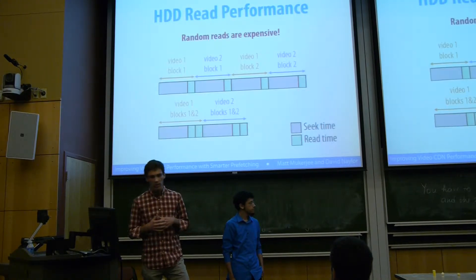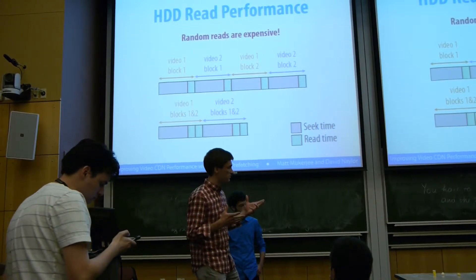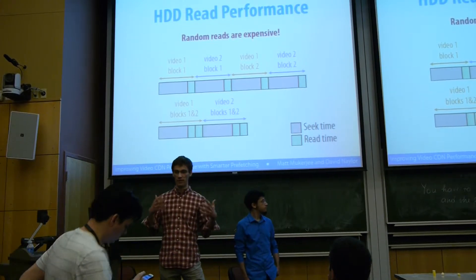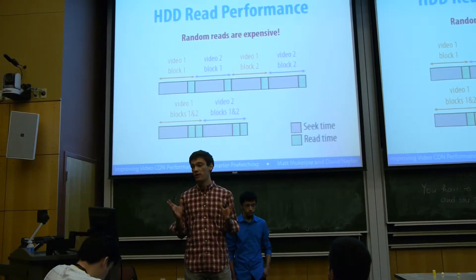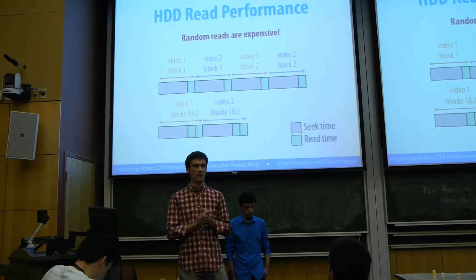We think part of the problem is disk contention. If you think about it, one of these servers is going to see tens of thousands of concurrent video requests, and this is going to amount to a swarm of random reads to the disk. If you know anything about hard drives, you know that's a recipe for disaster.